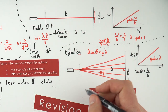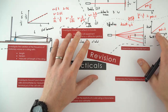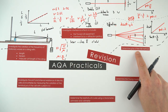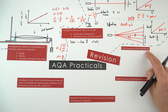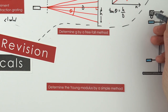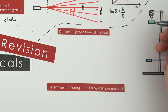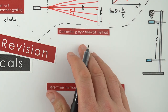That covers interference using a double slit and a diffraction grating. The next practical is determining g by a freefall method. The setup depends on your school's equipment. One common setup uses an electromagnet holding a steel ball bearing, which drops when the electricity is turned off - ensuring it falls from the same height each time. Two light gates connected to a timer measure the time to fall distance S between them.